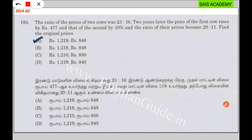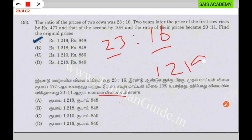First, we have 23 seconds to answer. We have 24 seconds to answer. We are going to be 23. First, we have three numbers. We will get three numbers and then five numbers. If we get five numbers, we will get three numbers, then five numbers.